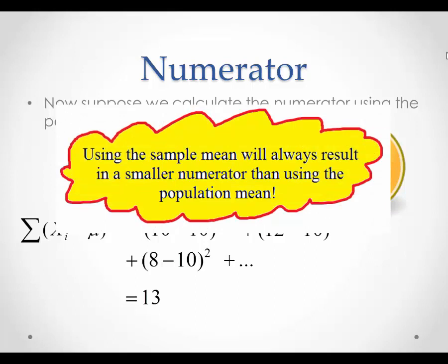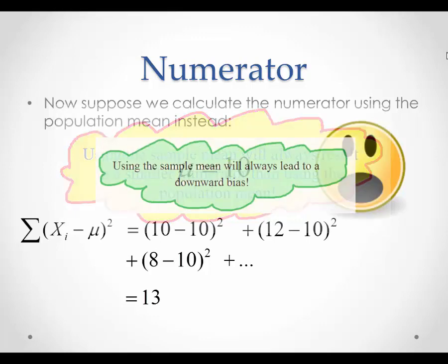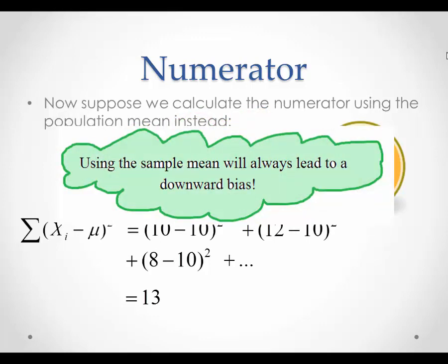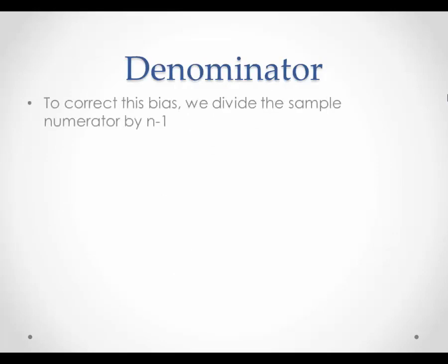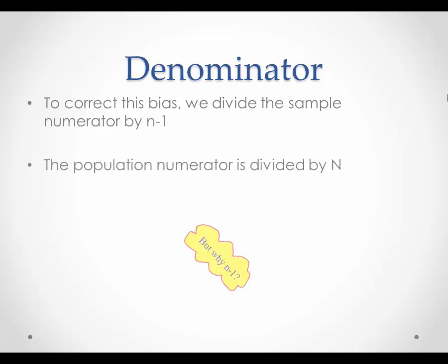Why does using the population mean give us 13 when using the sample mean gave us 12.8? Using the sample mean will always give us a smaller numerator in the variance formula than when using the population mean. By construction, the sample mean is closer to the observations. The population mean, on the other hand, is independent of the individual observations in the sample and is thus naturally further away. So using the sample mean will always lead to a downward bias in the numerator of the variance formula. To correct this downward bias, we divide the numerator by n minus 1, as seen in the sample variance formula, whereas in the population variance formula we divide by n.